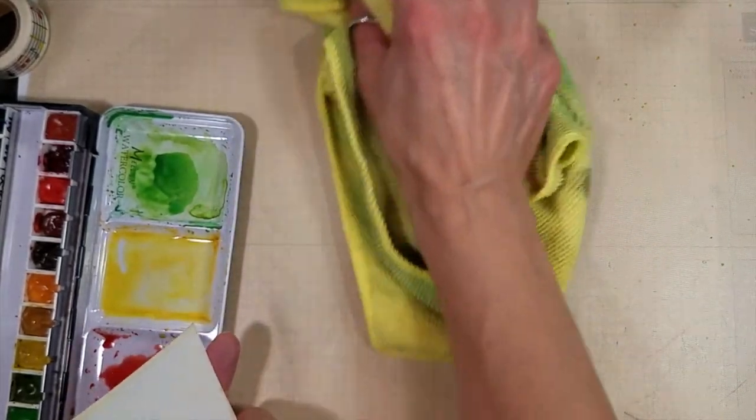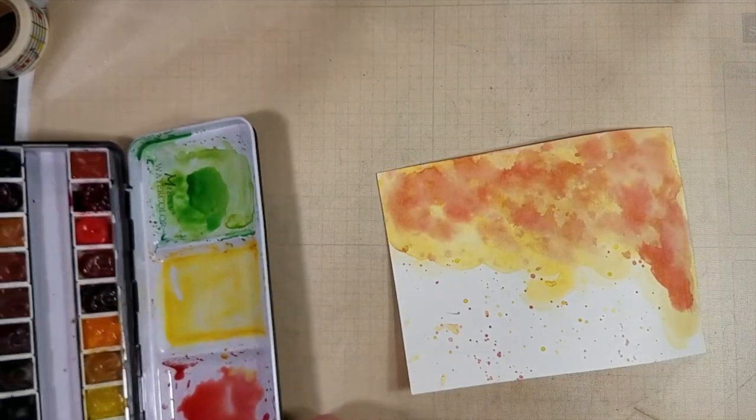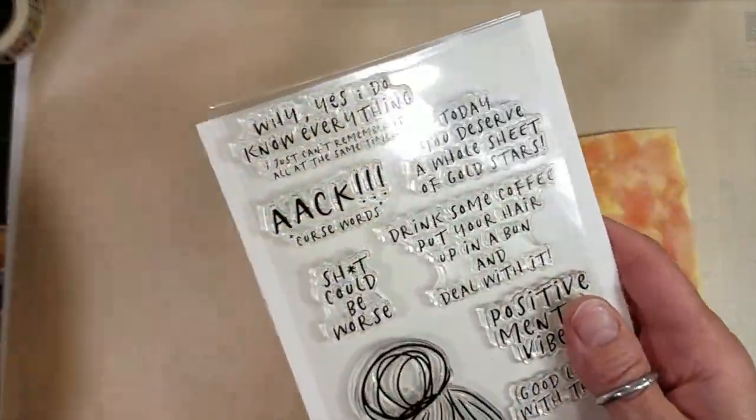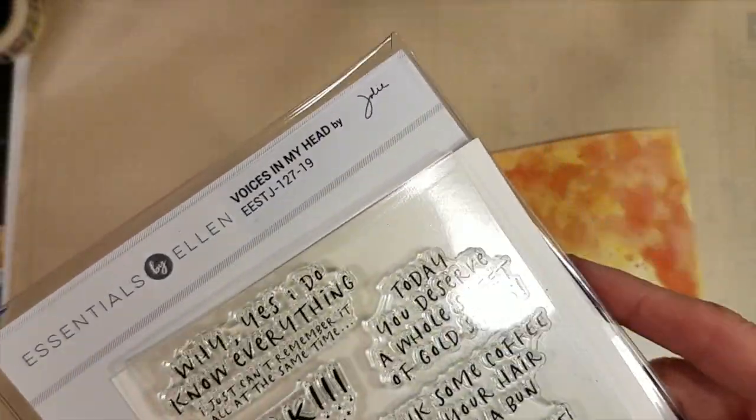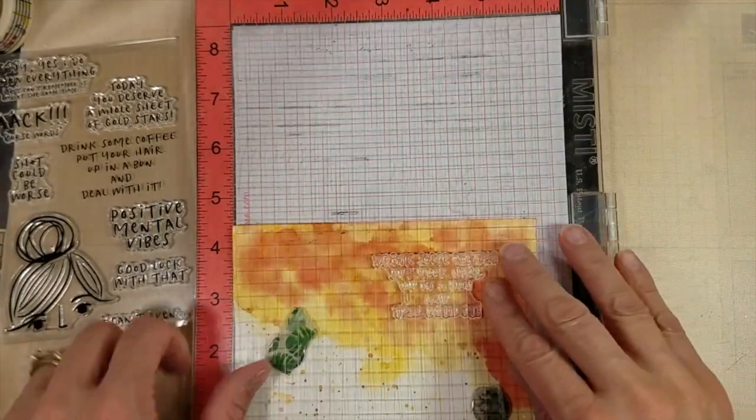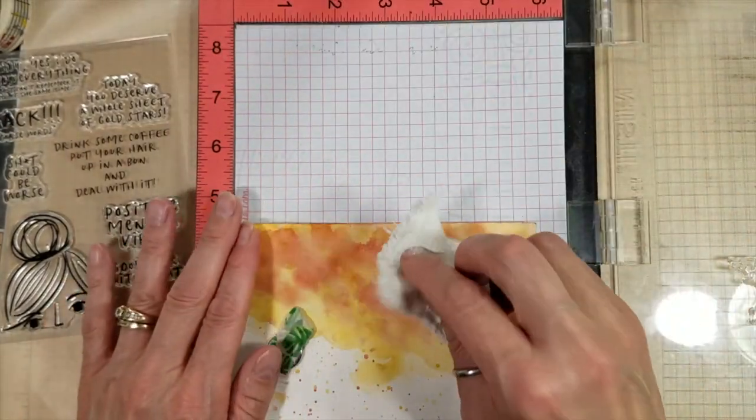So I've dried it thoroughly because we're going to do some heat embossing here. I am going to take one of the sentiments. Something about putting your hair up in a bun, drinking some coffee, and getting on with it. But you'll be able to see the exact sentiment when we're done here.